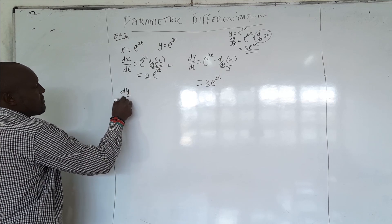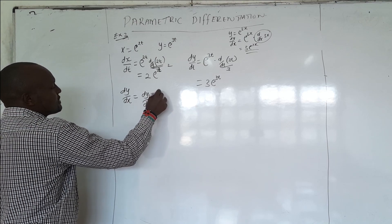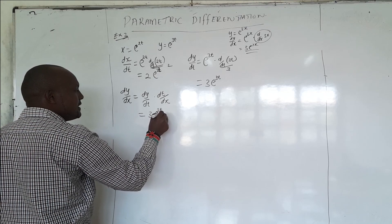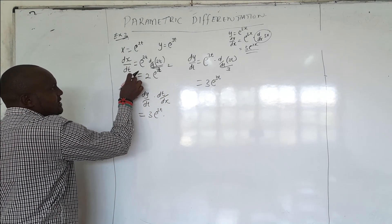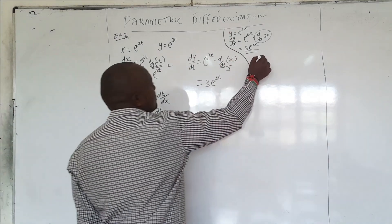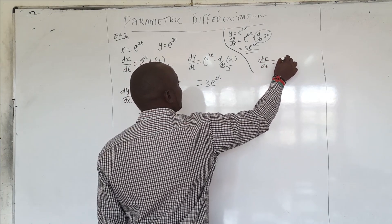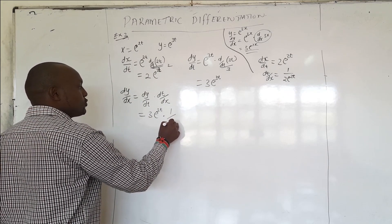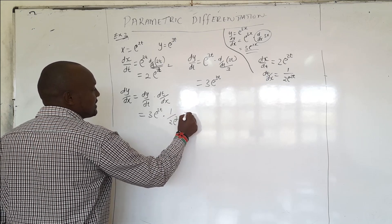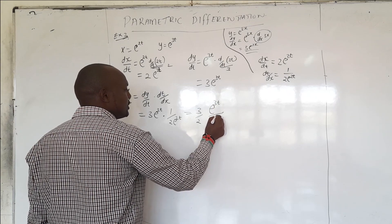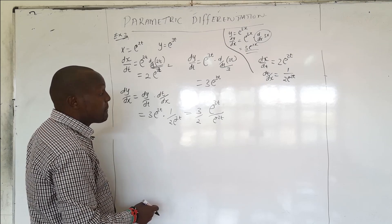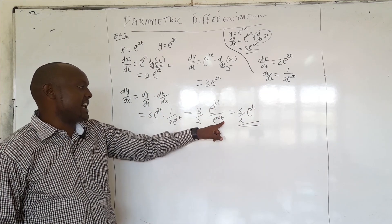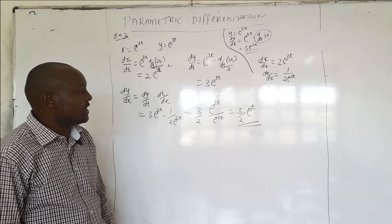To get dy/dx, we use dy/dt times dt/dx. Our dy/dt is 3e to the power 3T. For dt/dx, the reciprocal of dx/dt gives 1 over 2e to the power 2T. So dy/dx equals 3e to the power 3T over 2e to the power 2T. Using the rule of indices — when the base is the same, subtract the powers — we get 3T minus 2T equals T, so dy/dx equals 3 over 2 times e to the power T.